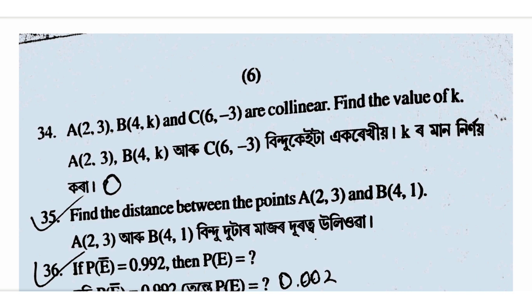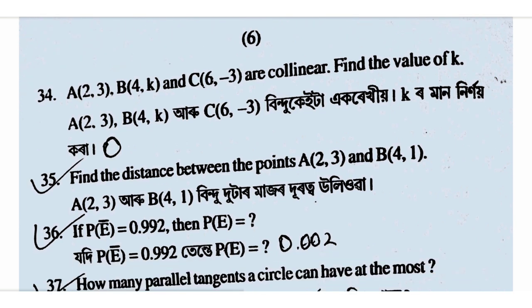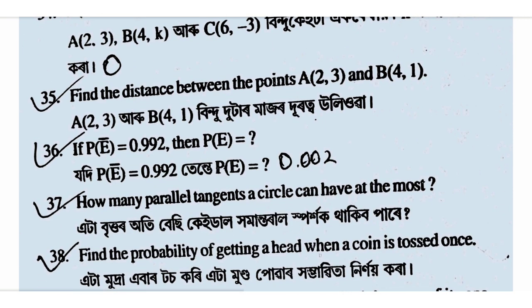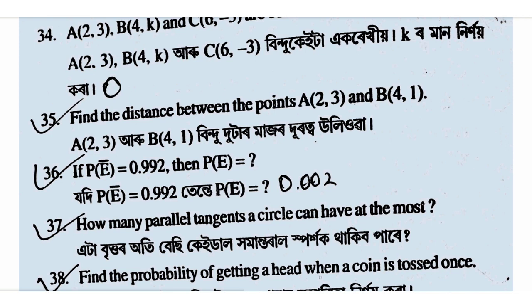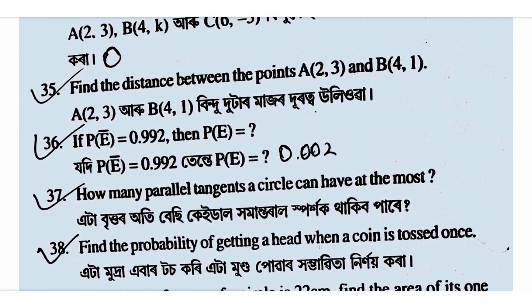At the collinearity point, we see the value: put one-half times x1 times (y2 minus y3) plus x2 times (y3 minus y1) plus x3 times (y1 minus y2) equal to 0. Given points A(2,3) and B(4,1), the distance formula gives the root of (x2 minus x1) squared plus (y2 minus y1) squared.